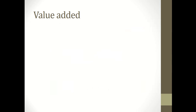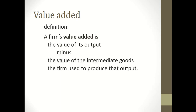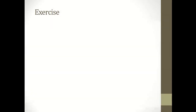The next concept is value added. A firm's value added is the value of its output minus the value of the intermediate goods the firm used to produce that output. This concept is related to GDP — value added equals the value of the firm's output minus the value of the intermediate goods used to produce it.